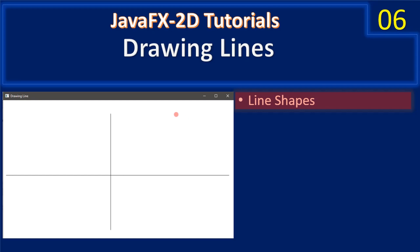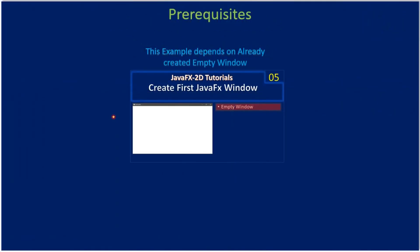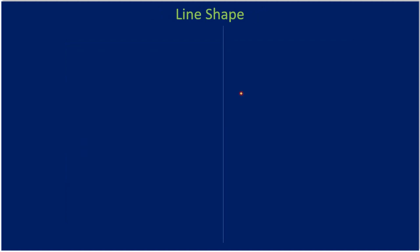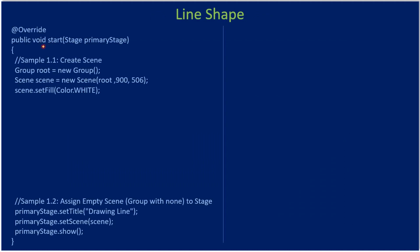Hello friends, welcome to the Java 2D tutorial. In this video we will see how to draw lines. This video depends on the previously created 'empty window' video — watch that as a prerequisite. We will continue with line drawing, and to draw a line we need two points. In this example we will draw line one and then one more line, line two. We already have our stage ready from the previous video code snippet, which shows sections 1.1 and 1.2.